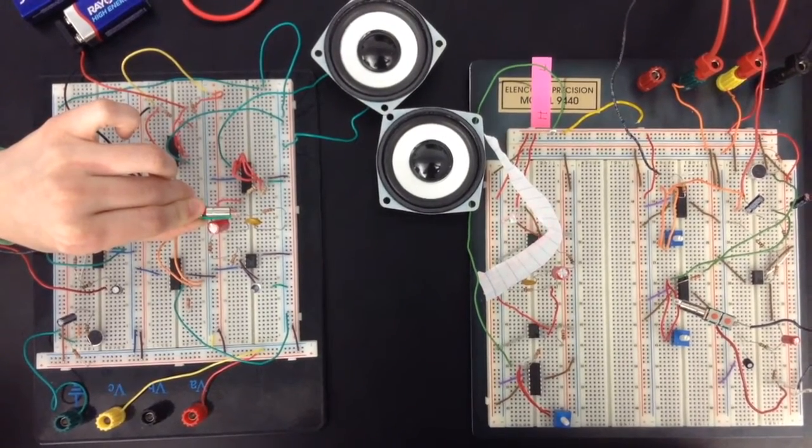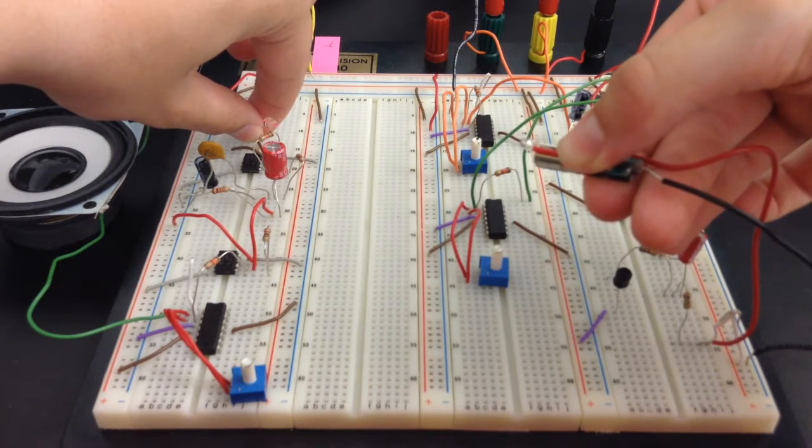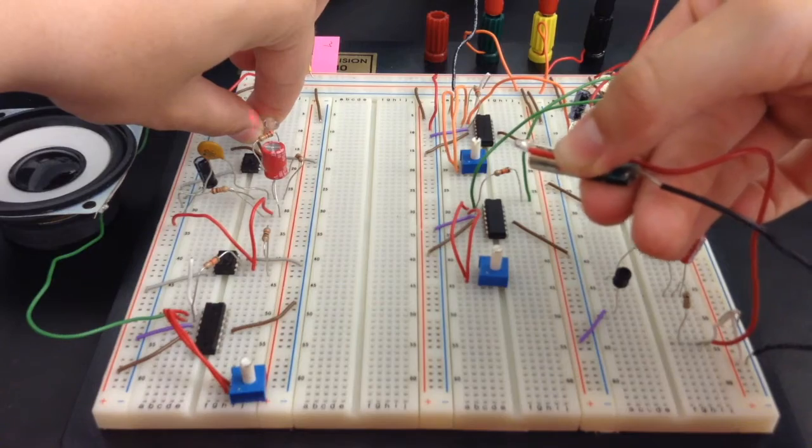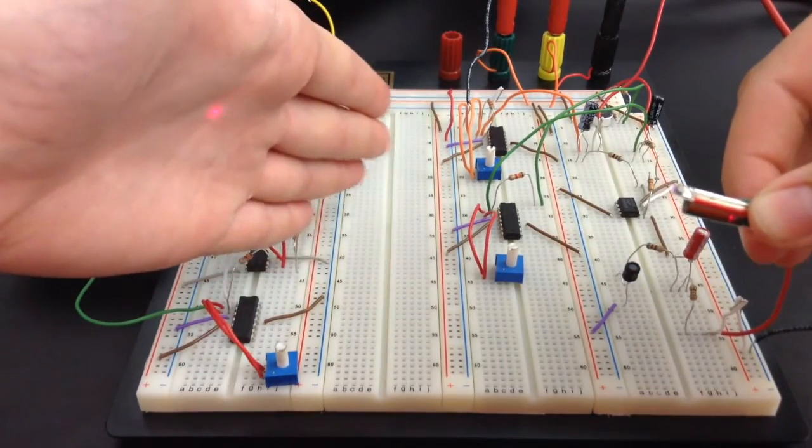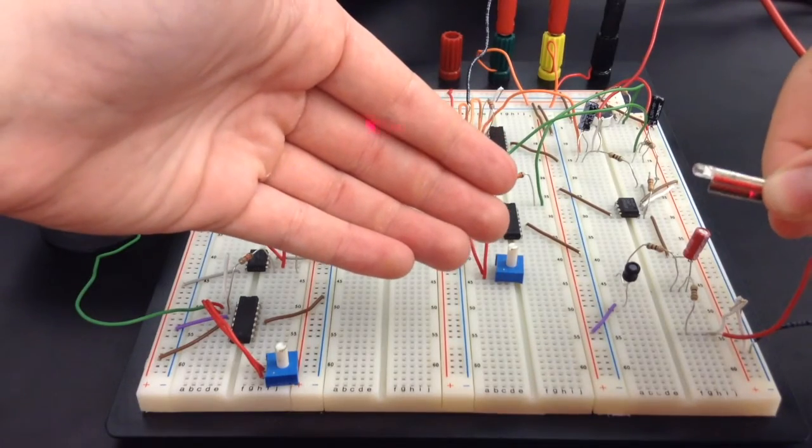We were able to successfully make these transmitting and receiving circuits to act as a two-way communication system. We were able to transmit and receive at up to 15 feet and we were able to get decibel readings of over 70 decibels measured two feet from our speaker.